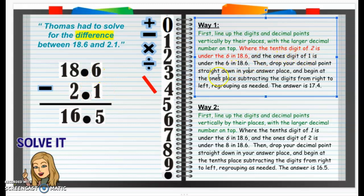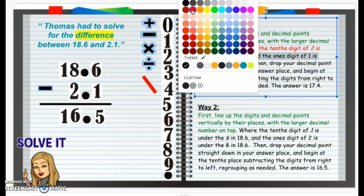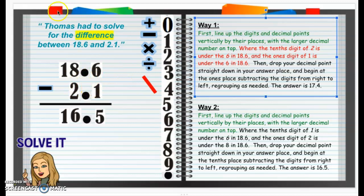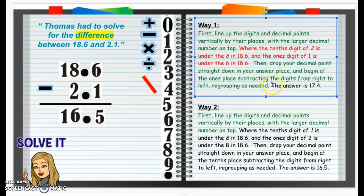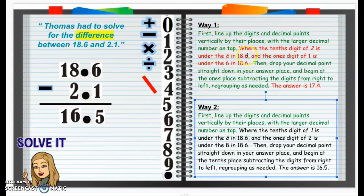And then Way 1 says the 1's digit of 1 is under the 6 in 18. Well, the 1 is under the 6, but it's not the 1's digit — it's a tenths digit. So that's not quite right either. It seems Way 1 has Thomas switching the digits, as if it were 1 and 2 tenths. Then drop your decimal point straight down — yes, we did that. And begin at the 1's place, subtracting the digits from right to left, regrouping as needed — yes, indeed, that part is correct. But Way 1 gives the answer as 17 and 4 tenths. We didn't get 17 and 4 tenths; we got 16 and 5 tenths. So there are some good parts of Way 1, but it is not fully correct.